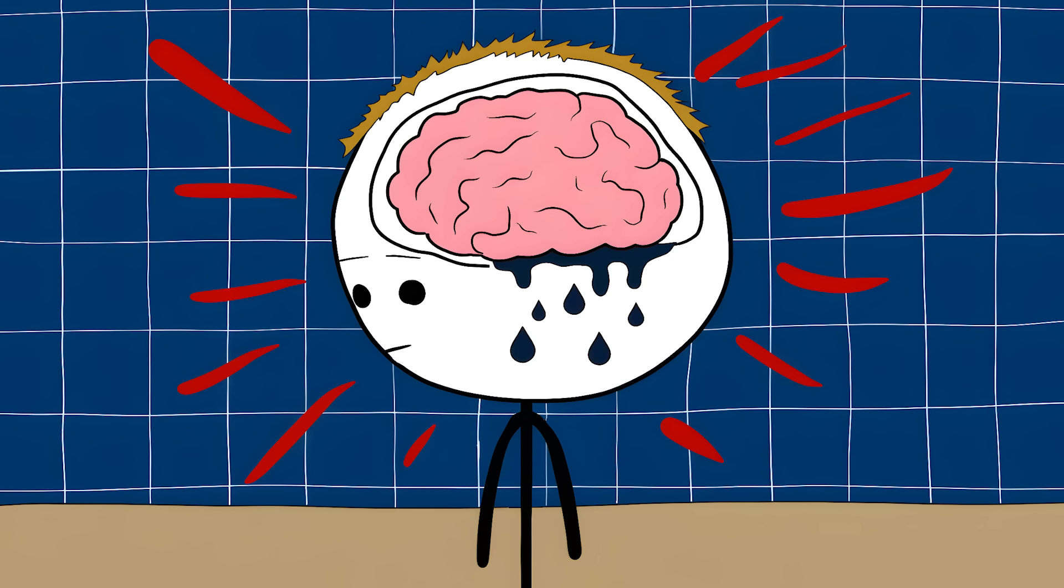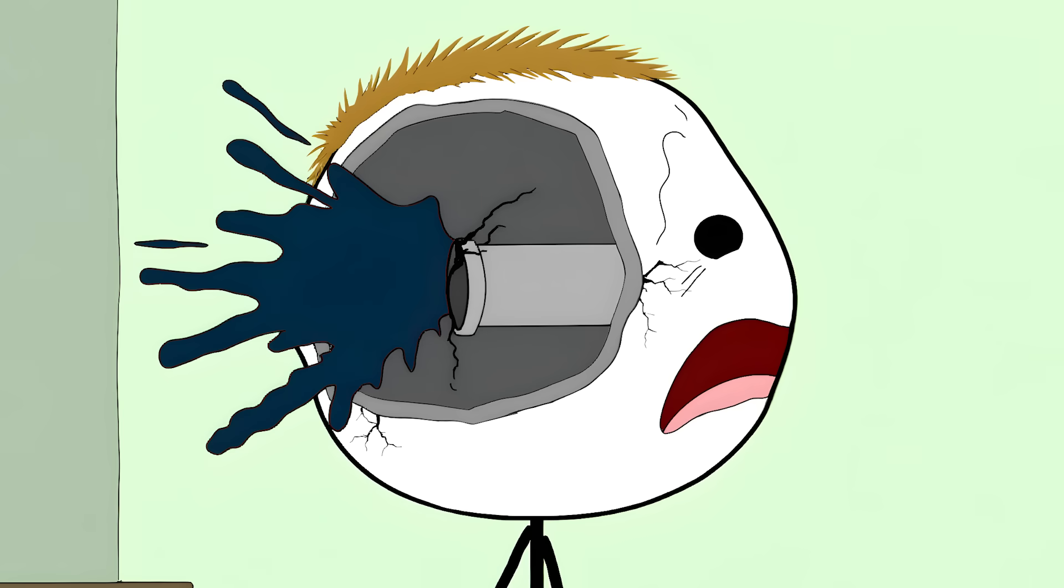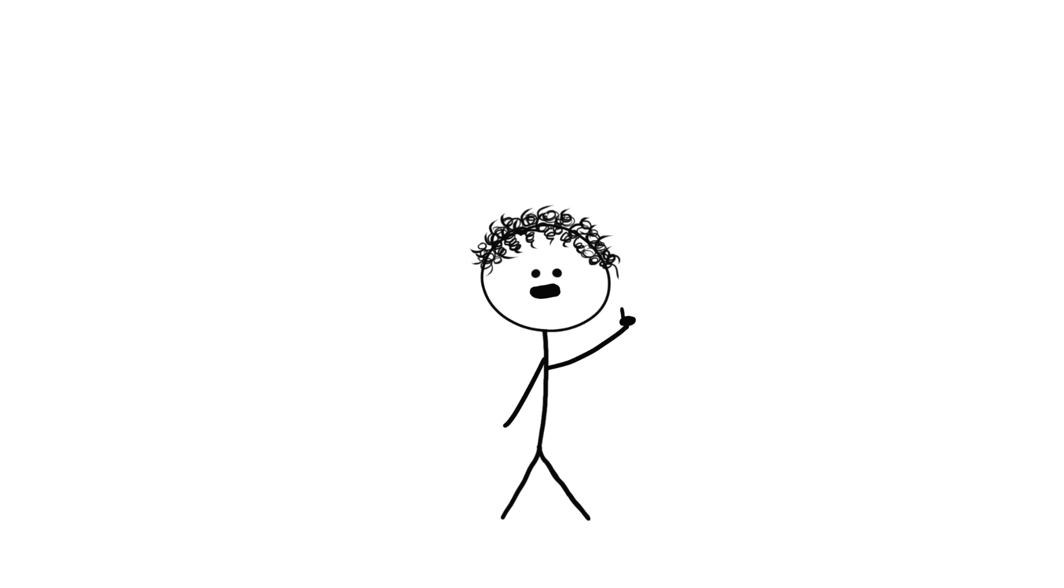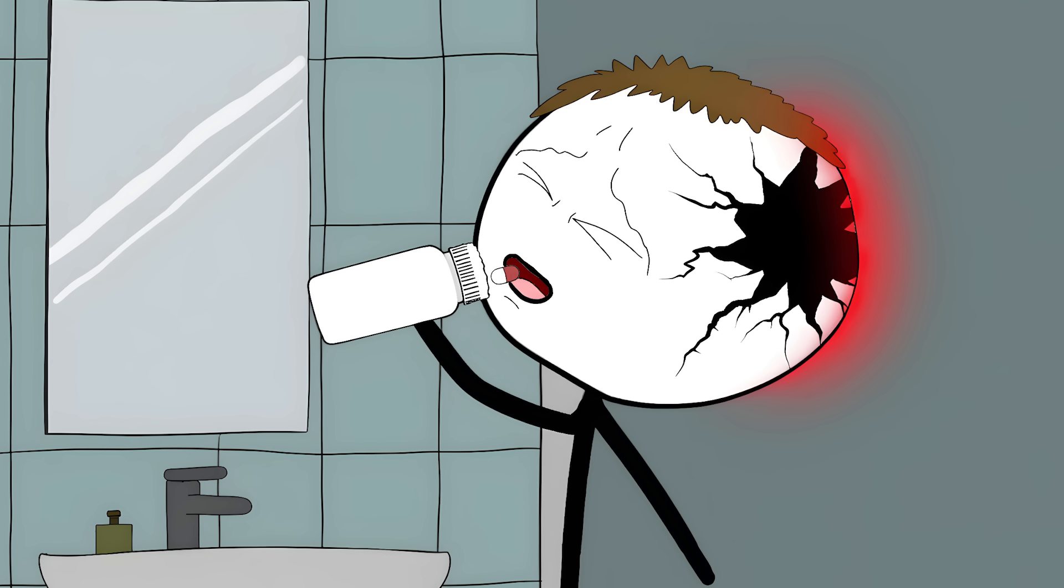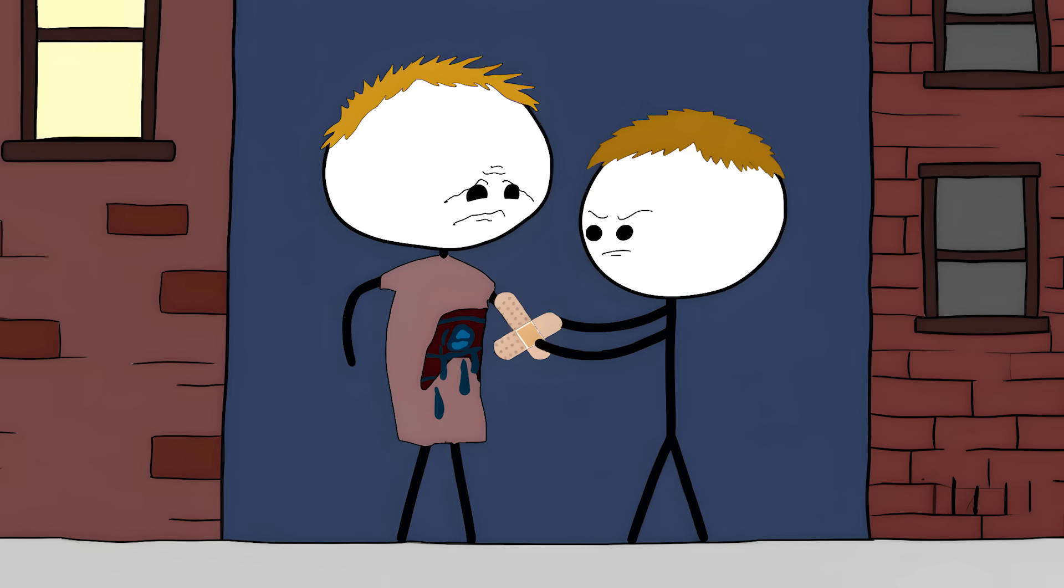This type of headache could mean there's bleeding in your brain. It's like having a pipe burst in your house, except the pipe is in your head and the water is blood. Most people make a huge mistake when this happens. They think, oh, it's just another migraine, and pop some painkillers. Taking painkillers for this is like putting a band-aid on a bullet wound.